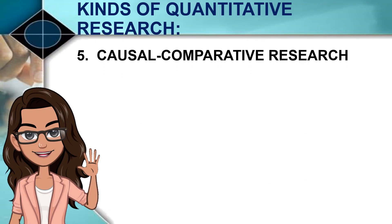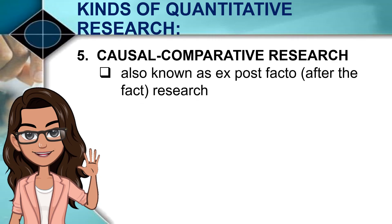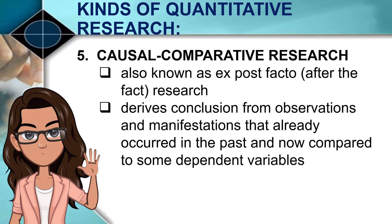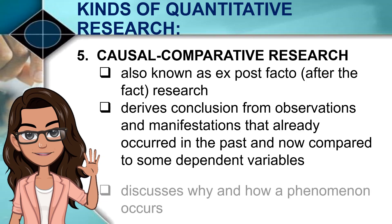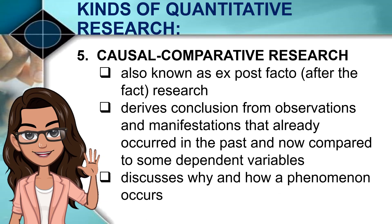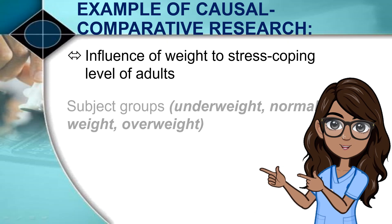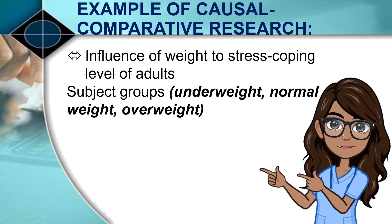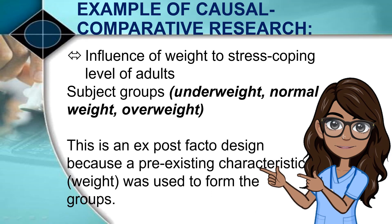The fifth kind of quantitative research is causal comparative research, also known as ex post facto or after-the-fact research. This kind of research derives conclusions from observations and manifestations that already occurred in the past and are now compared to some dependent variables. It discusses why and how a phenomenon occurs. An example is the influence of weight on the stress-coping level of adults — subjects would be separated into different groups like underweight, normal weight, and overweight, and their stress-coping levels measured. This is an ex post facto design because a pre-existing characteristic, weight in this instance, was used to form the groups.